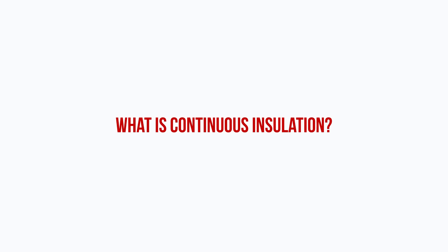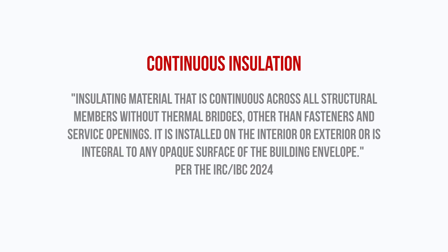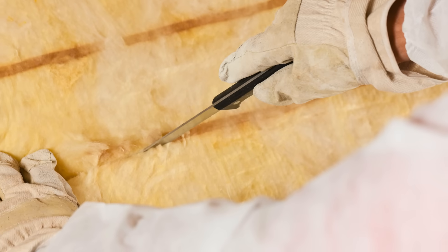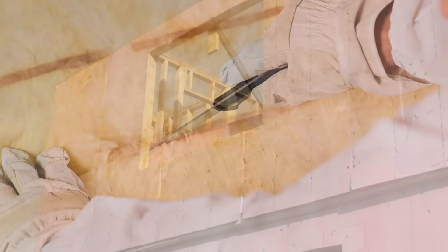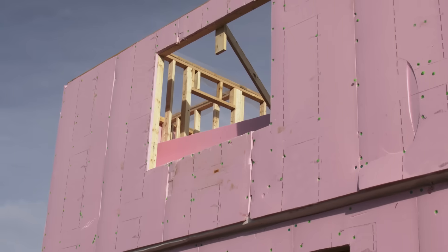So what exactly is continuous insulation? This is the code definition that's been adopted by the International Residential Code and the International Building Code: an insulating material that's continuous across all structural members, without thermal bridges other than fasteners and service openings. It is installed on the interior or exterior, or is integral to any opaque surface of the building envelope.